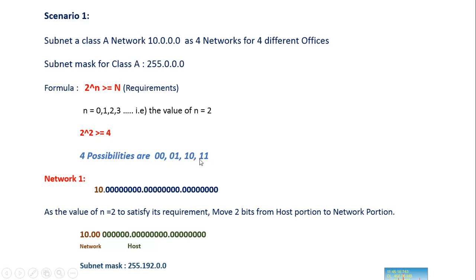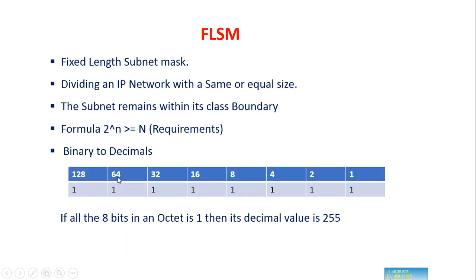Since this is a Class A network, the first octet is the network ID and all host bits are converted to binary. With n equal to 2, we borrow 2 bits from the host bits to the network bits. So the first two host bits now belong to the network portion. The new subnet mask becomes 255.192.0.0, because the two borrowed bits correspond to decimal values 128 and 64, and 128 plus 64 equals 192.